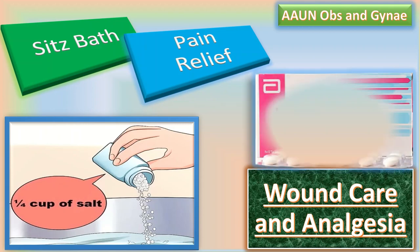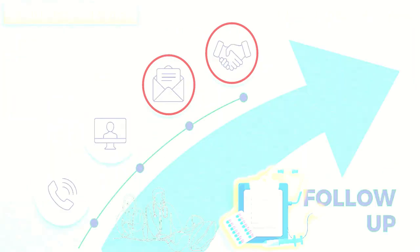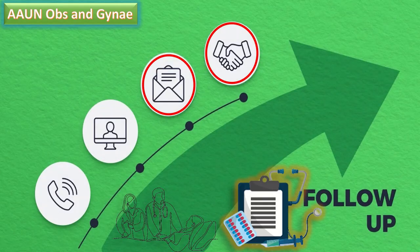For wound care and analgesia, use of sitz baths twice daily is recommended for pain relief, along with analgesics such as ibuprofen. If the woman has excessive pain in the days after repair, she should be examined immediately because pain is a frequent sign of infection in the perineal area.